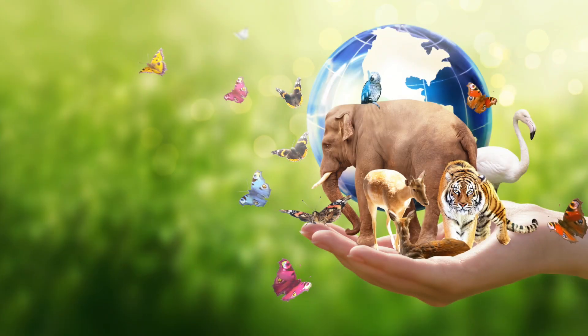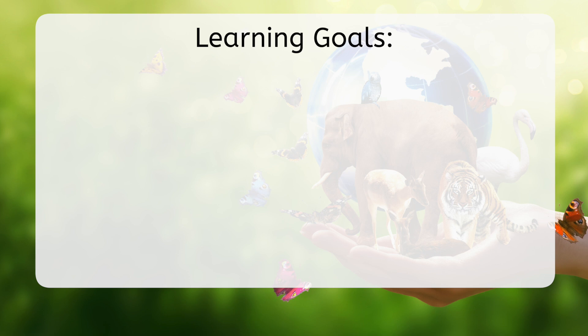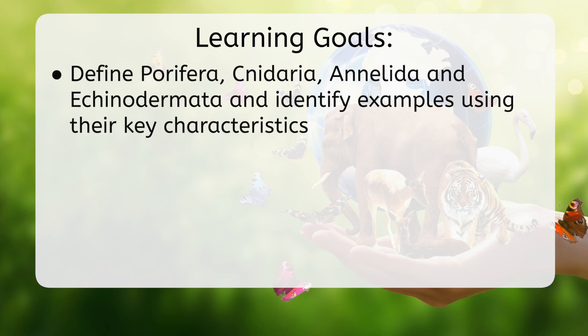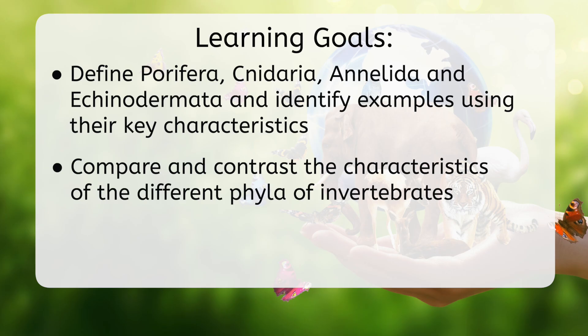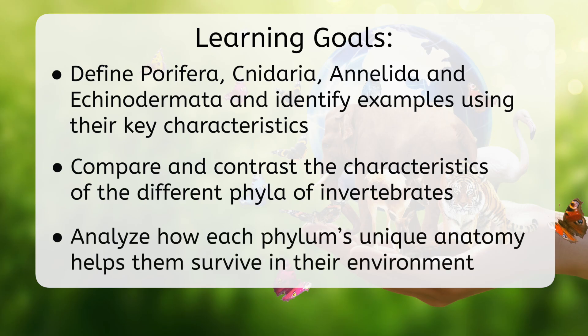But before we get started, let's look at our goals for this lesson. By the end, you'll be able to define Porifera, Cnidaria, Annelida, and Echinodermata, and identify examples using their key characteristics, to compare and contrast the characteristics of the different phyla of invertebrates, and to analyze how each phyla's unique anatomy helps them survive in their environment.